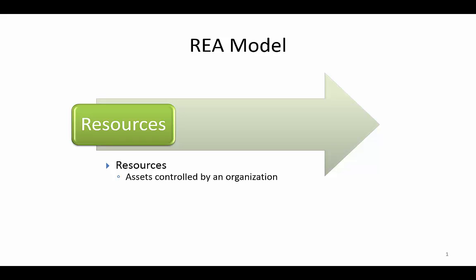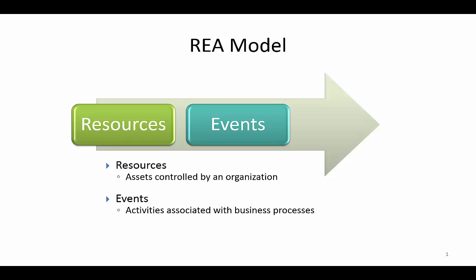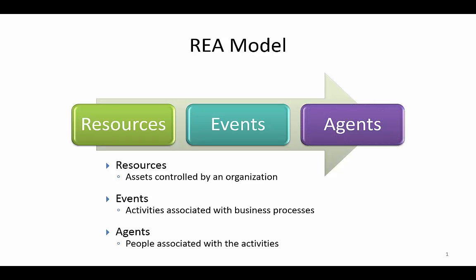What do we mean when we say REA? We've got Resources — these are the assets that the organization controls, the assets of interest to the domain we're investigating. Then we've got Events — these are activities associated with the various business processes we're investigating. And then we have Agents — people or organizations associated with these activities. Resources, events, and agents are all basically classes, and the relationships between them are the associations.